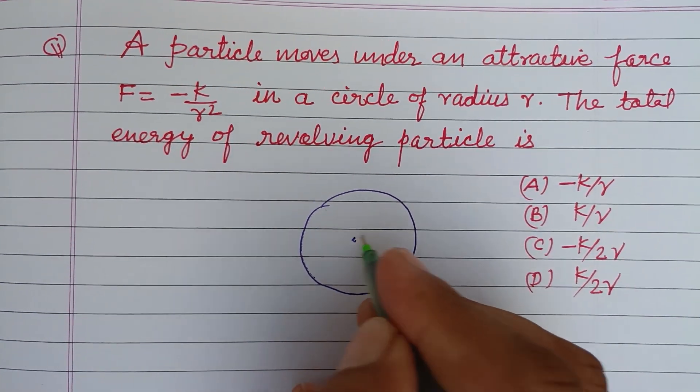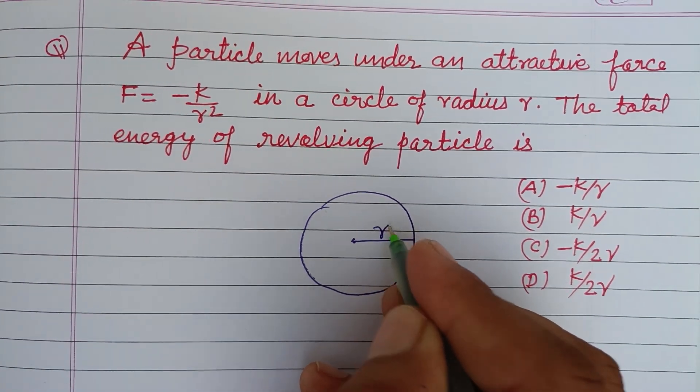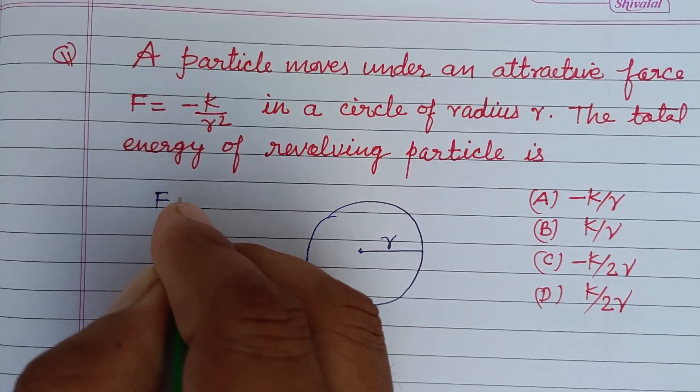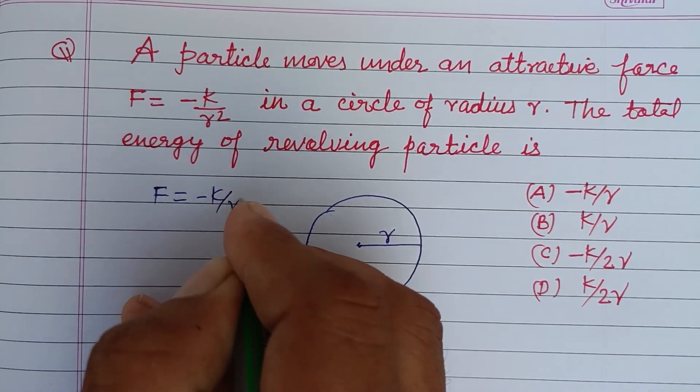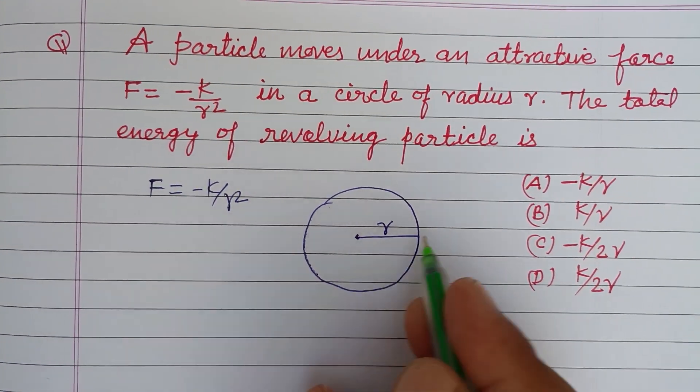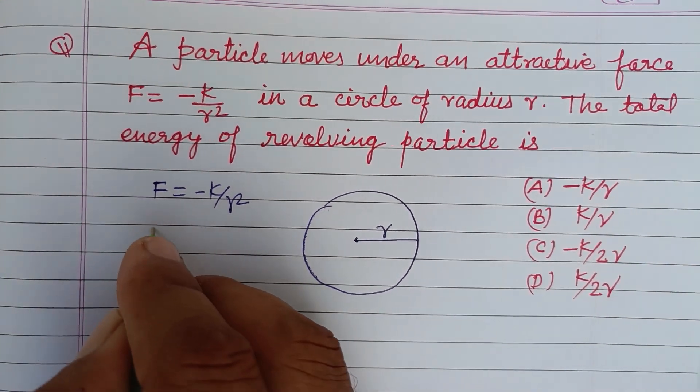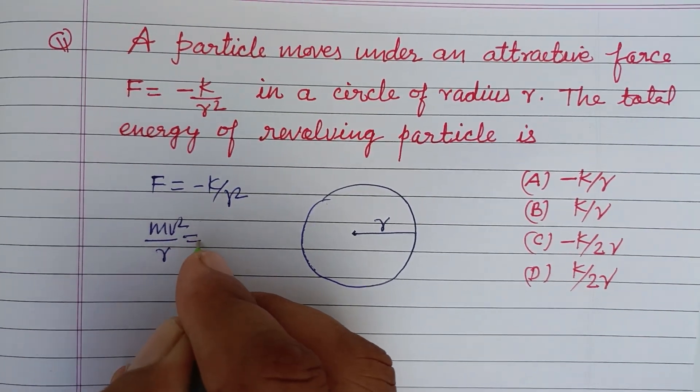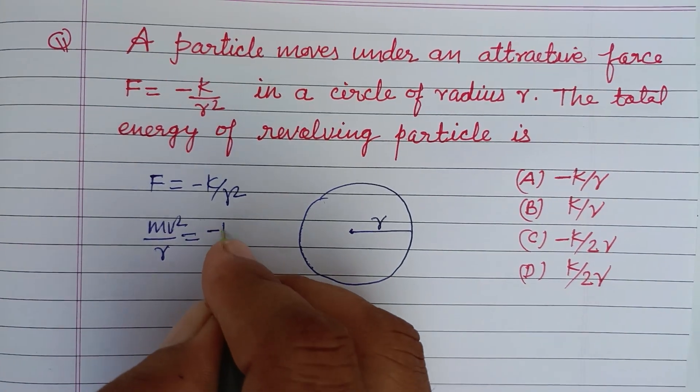Since the particle is revolving in a circle of radius R, here F is given to us minus K over R square. In a circular path, centripetal force which is mv square upon R acts on the particle, so mv square upon R equals minus K over R square.